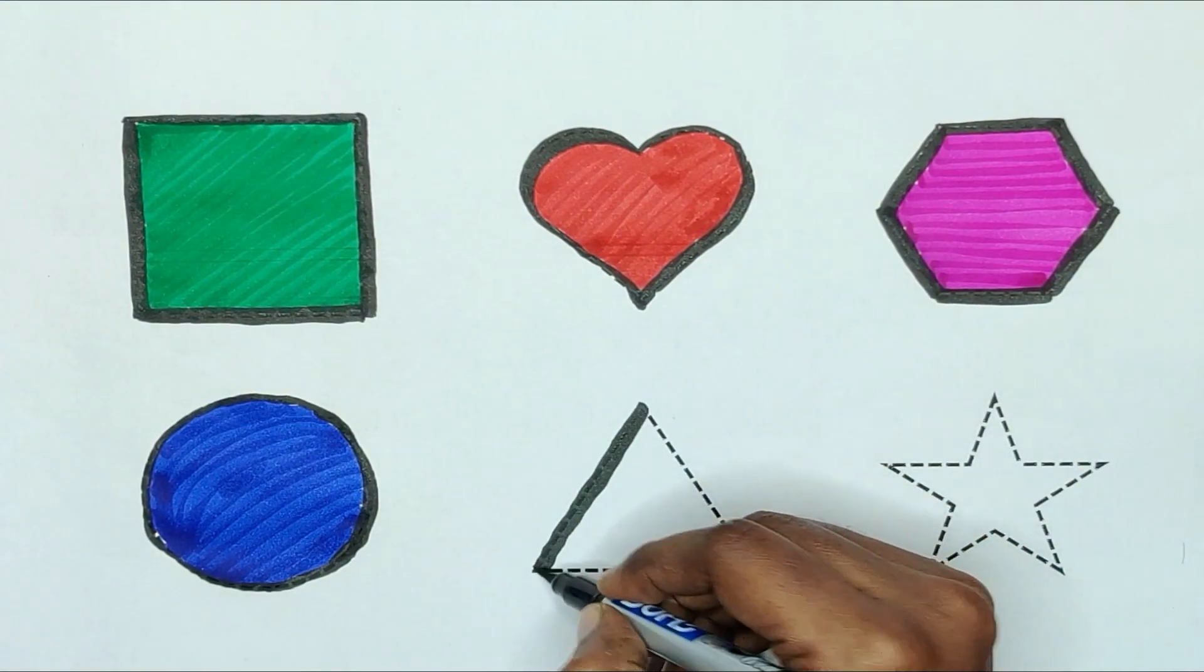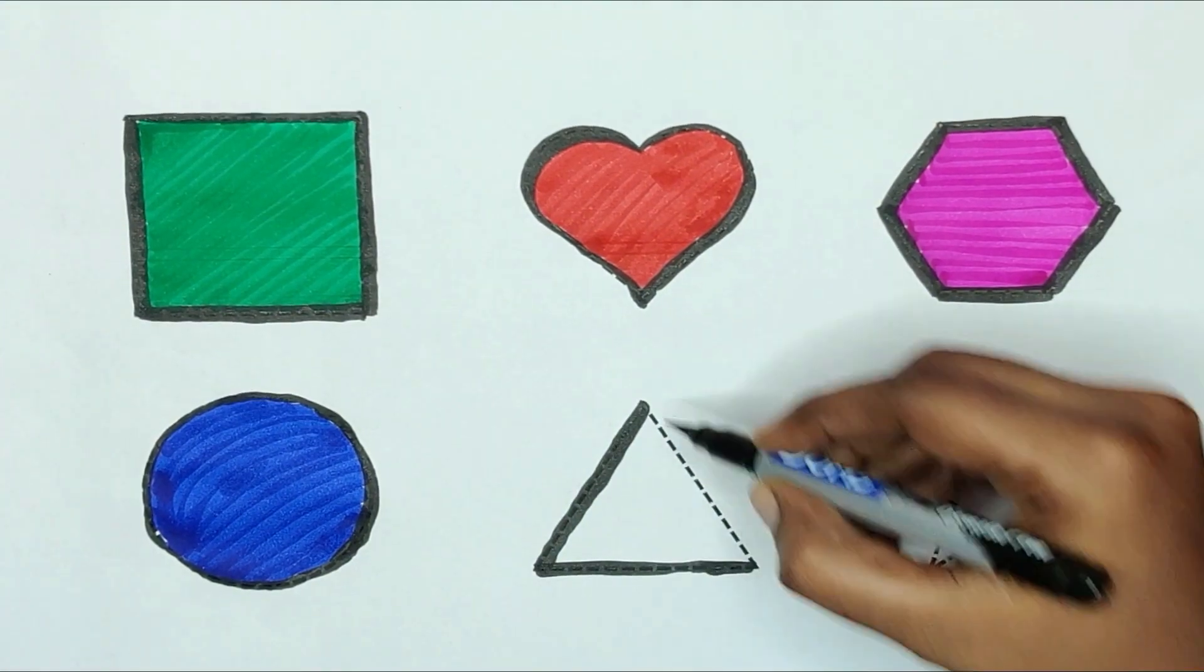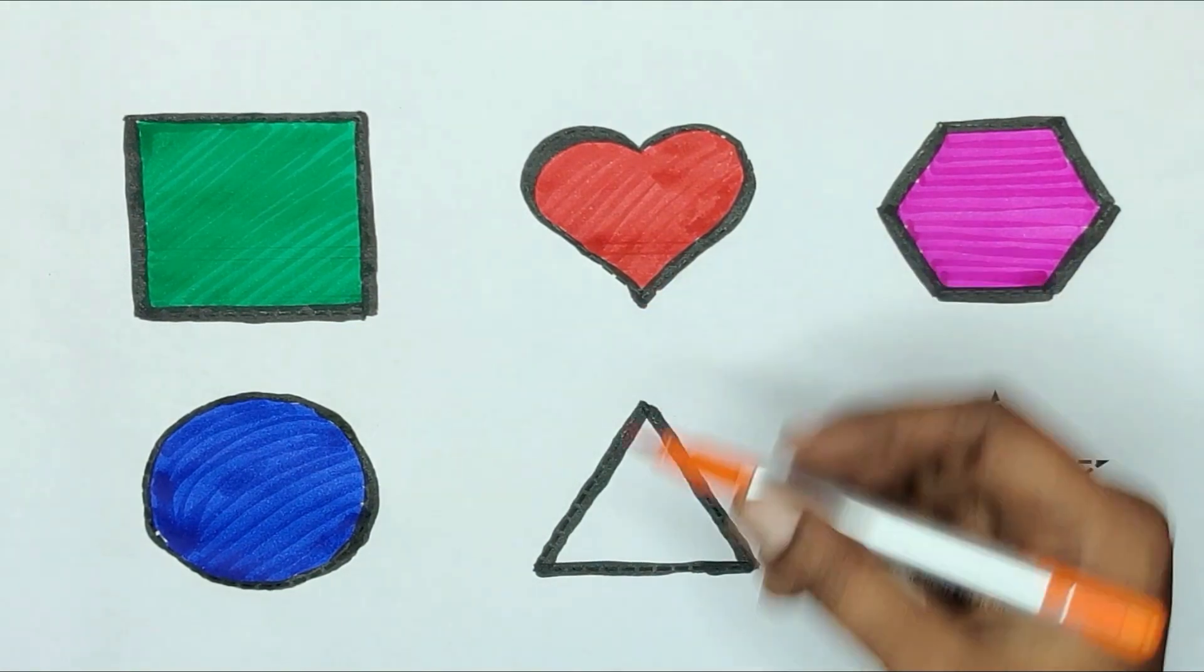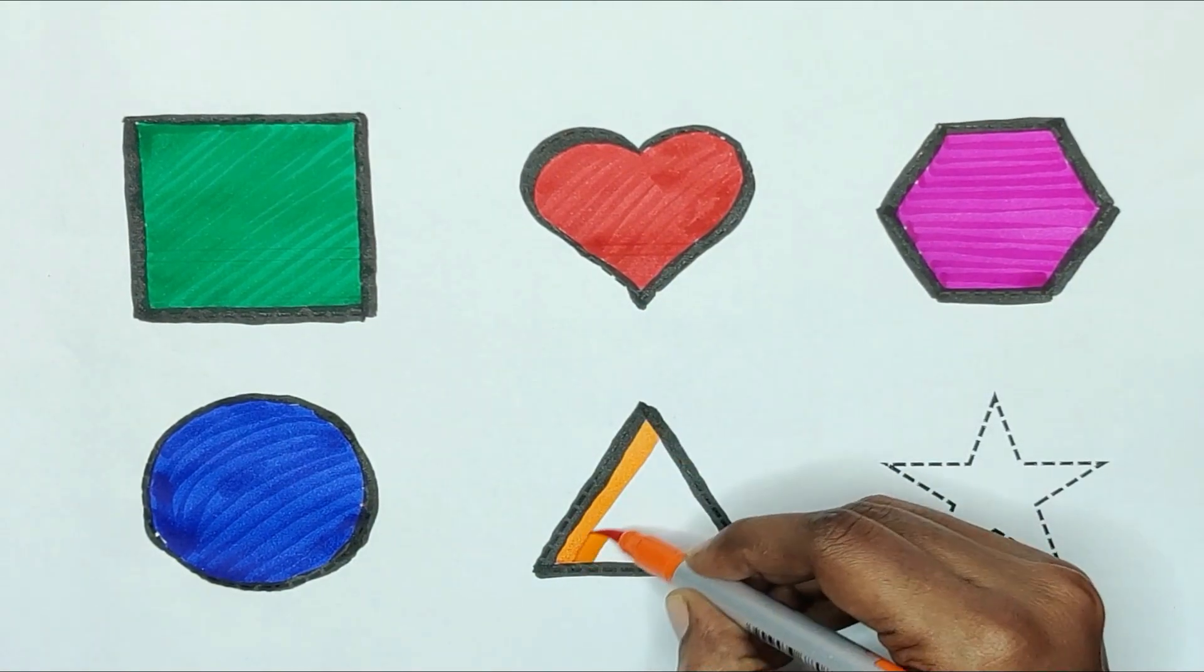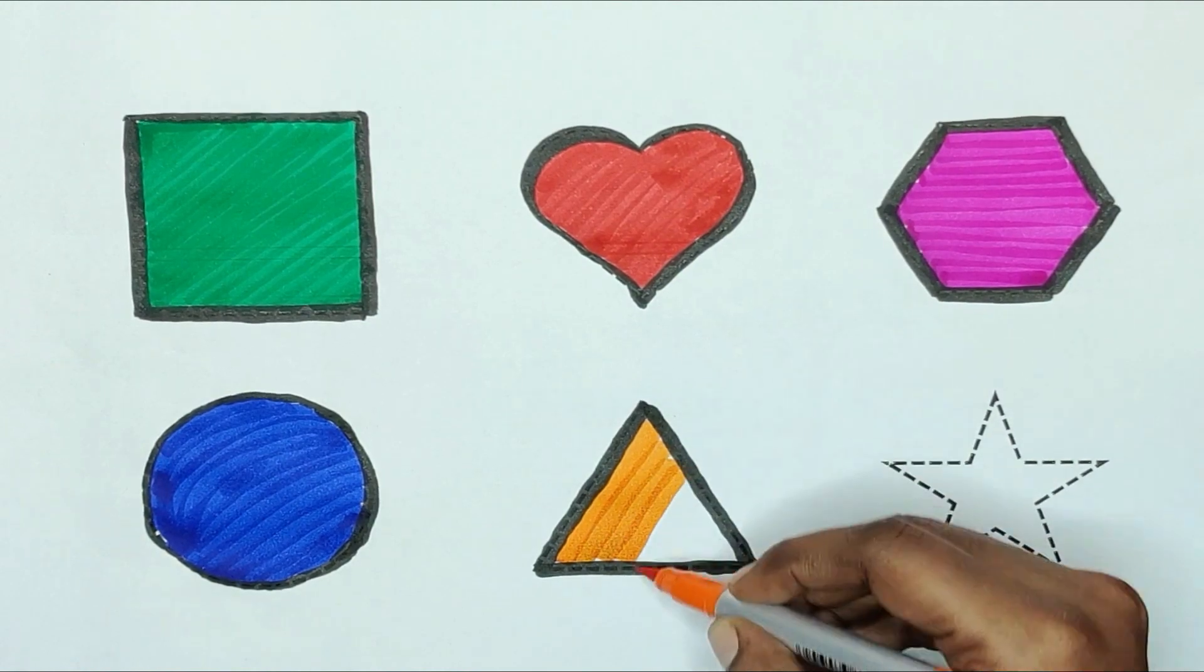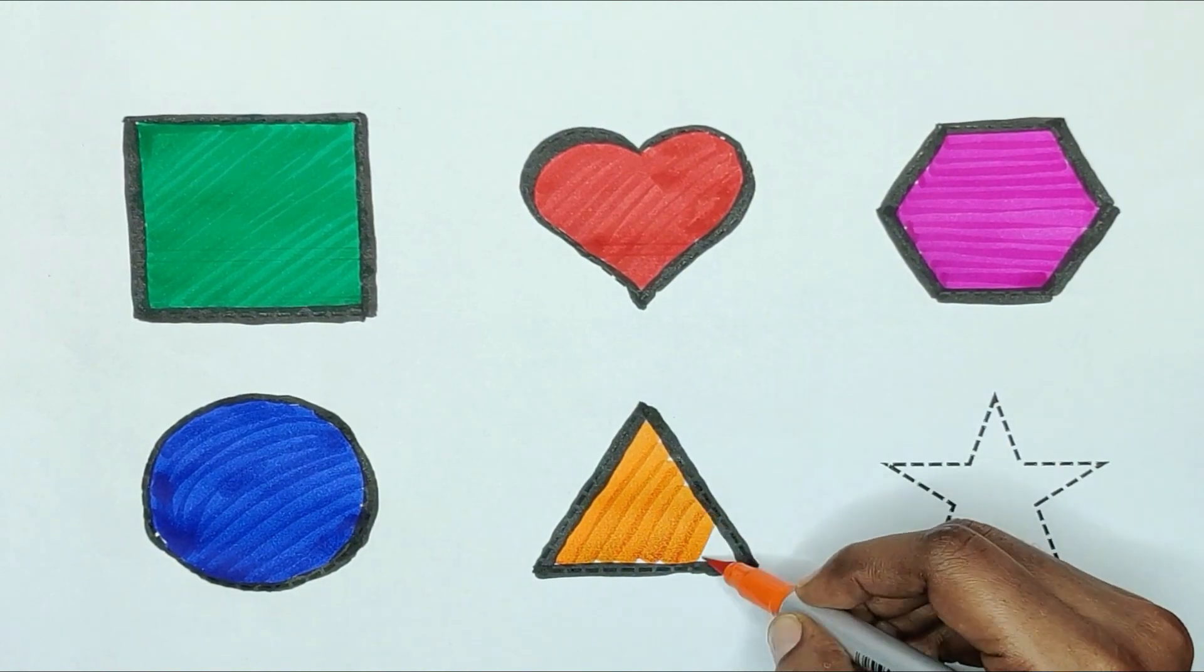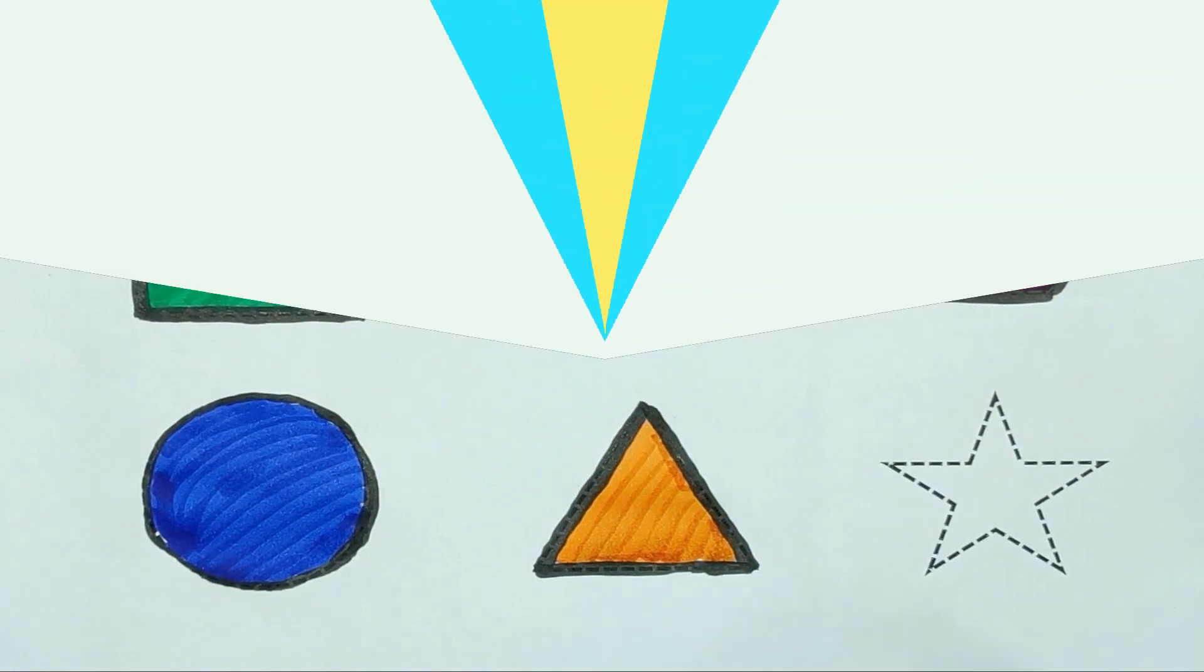Next, triangle. The shape is triangle. Orange color. Triangle shape is orange color.